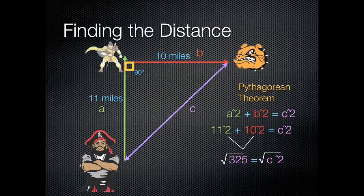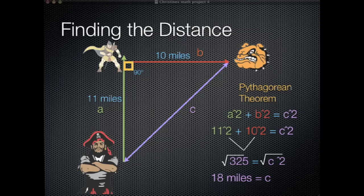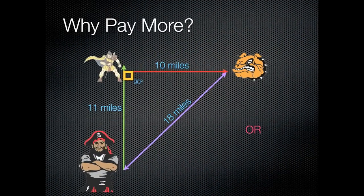We have to square root both sides so that C squared becomes just C. So if we square root 325, C would equal 18 miles. So our distance from Pinckney to Brighton would be 18 miles.